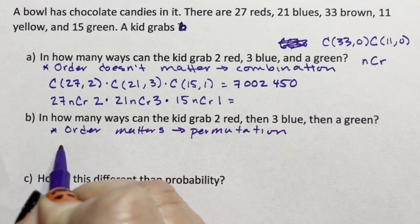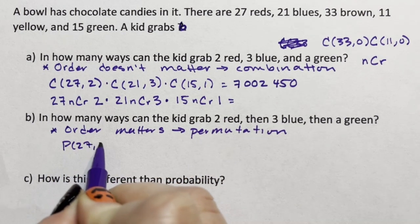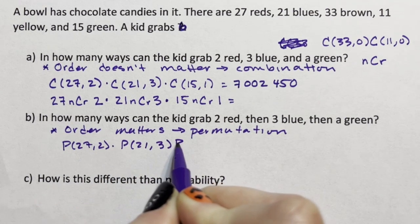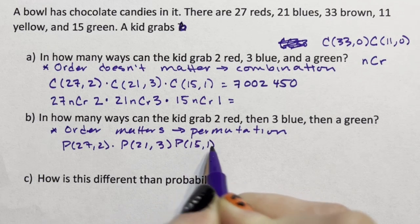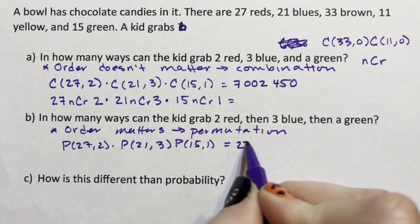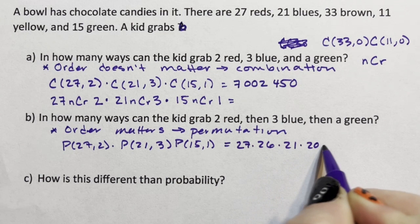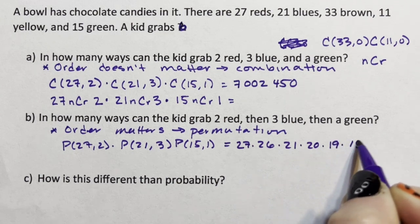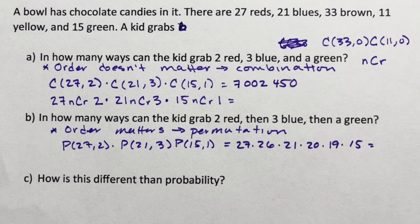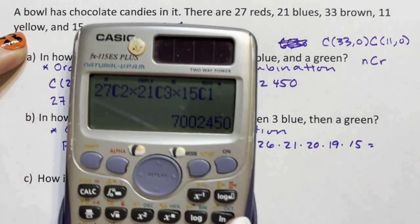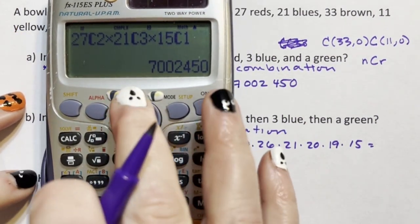So this is P(27,2) times P(21,3) times P(15,1). I think of permutation as being a truncated factorial, so this is literally 27 times 26 times 21 times 20 times 19 times 15. You're more than welcome to type that into your calculator. A few things you could also do: if I came on to this calculator, I can go back up and just come back here.